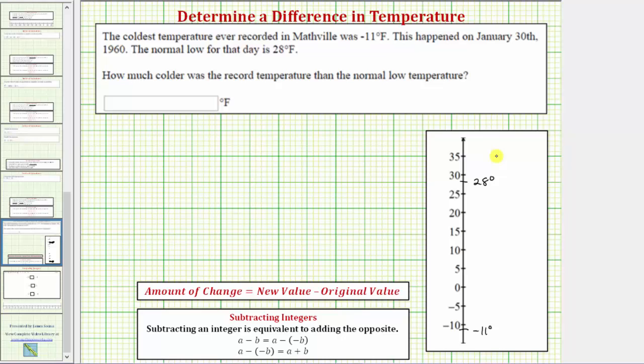So if we can determine the number of degrees between these two temperatures, we can determine how much colder negative 11 degrees is than 28 degrees.